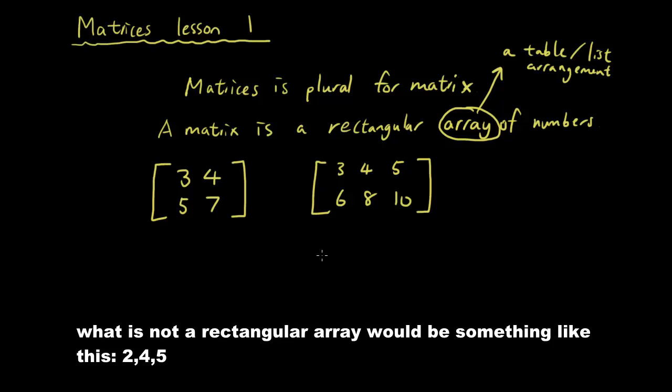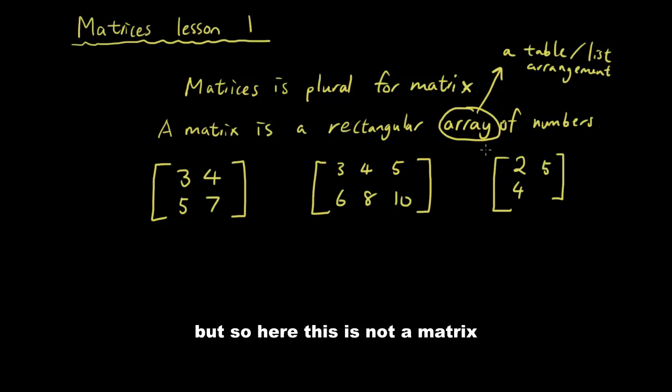What is not a rectangular array? What is not a rectangular array would be something like this, 2, 4, 5. So here, this is not a matrix because it's not in rectangular form.